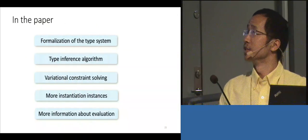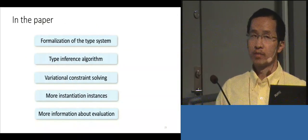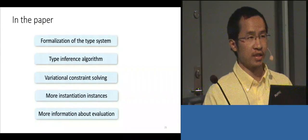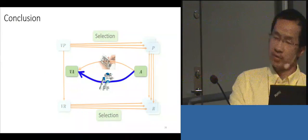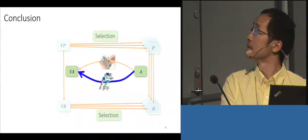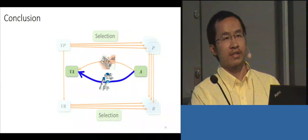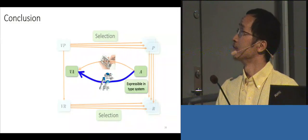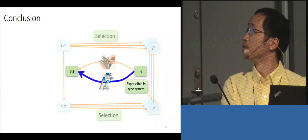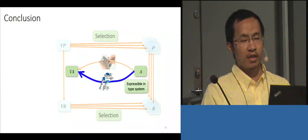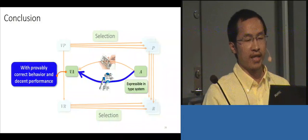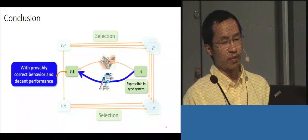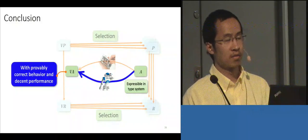These are the basic ingredients of this presentation, but the paper contains more information not covered in this talk. In summary, I present this analysis framework which takes as input a type system representing some analysis, and outputs the variational analysis that has correct behavior and good performance. That's my talk, thanks.